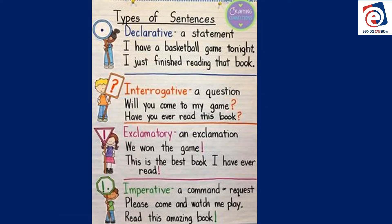One more final slide — types of sentences. To summarize, there are four types of sentences. Number one: a declarative sentence, also called a statement. It tells us something, just tells us something — a fact. For example: 'I have a baseball game tonight,' 'I just finished reading the book.' That's a declarative sentence; it ends with a period.